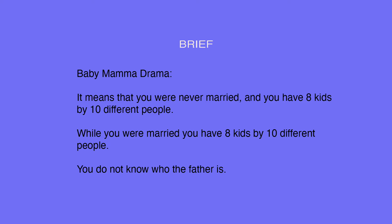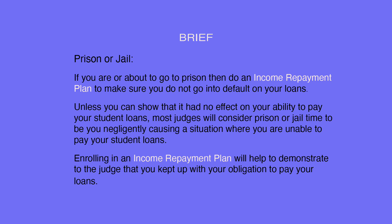Baby mama drama means that you were never married and you have had children by many different people, which you did not willfully cause. Prison or jail: if you are or are about to go to prison, then enroll in an income repayment plan to make sure you do not go into default on your loans. Unless you can show it has no effect on your ability to pay, most judges will consider prison or jail time to be you negligently causing a situation where you are unable to pay your student loans. Enrolling in an income repayment plan will help demonstrate to the judge that you kept up with your obligations to pay your loans.